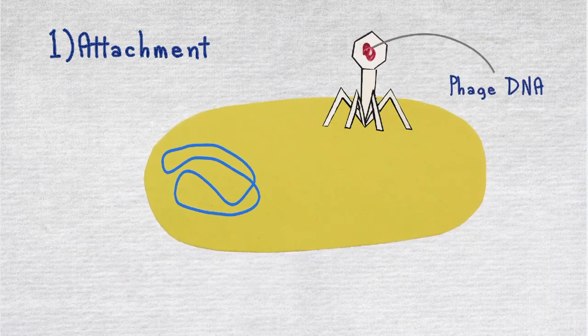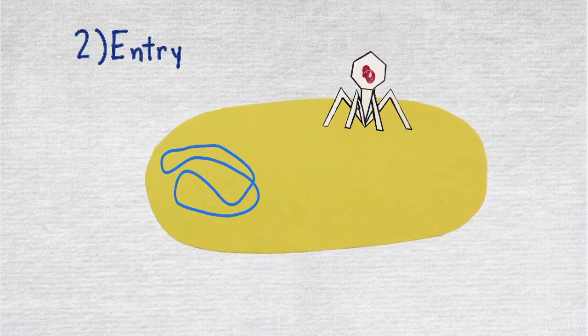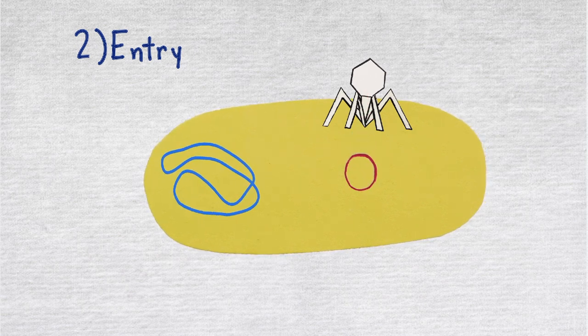After that, the entry stage happens. This is when the phage injects its double-stranded DNA genome into the cytoplasm of the bacterial cell.